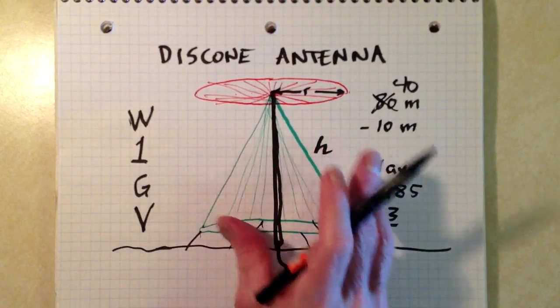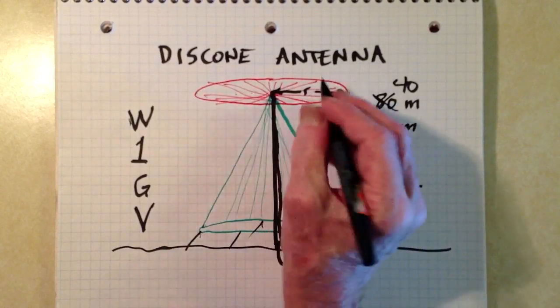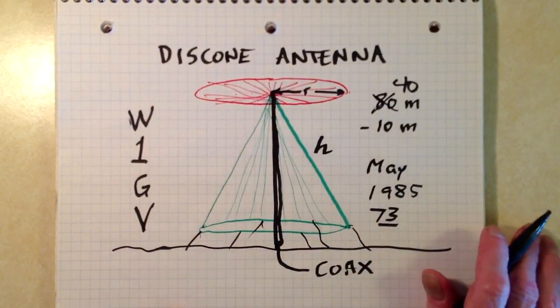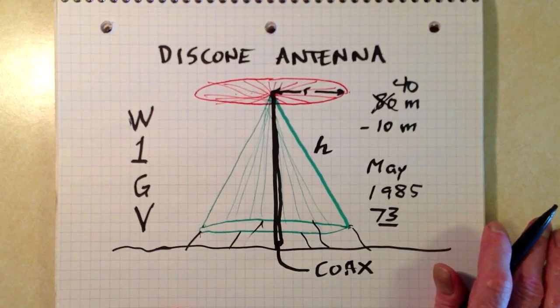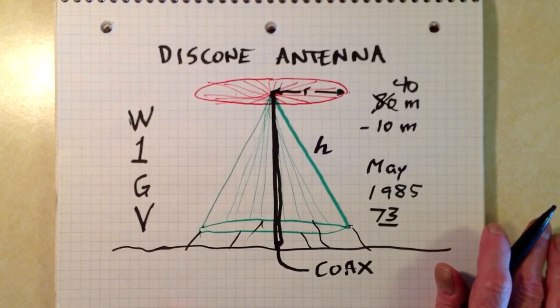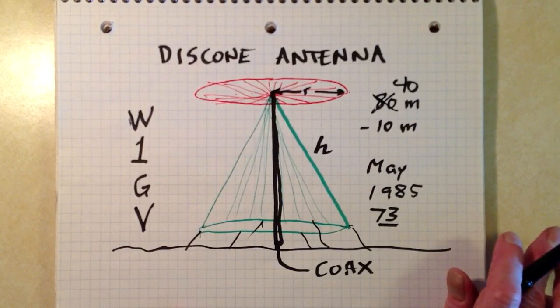So the cone is sort of like a ground radial system. The angle of radiation of an antenna like this is very low, almost just about horizontal. So it's a good DX antenna. And it's omnidirectional as well, like a vertical antenna would be.